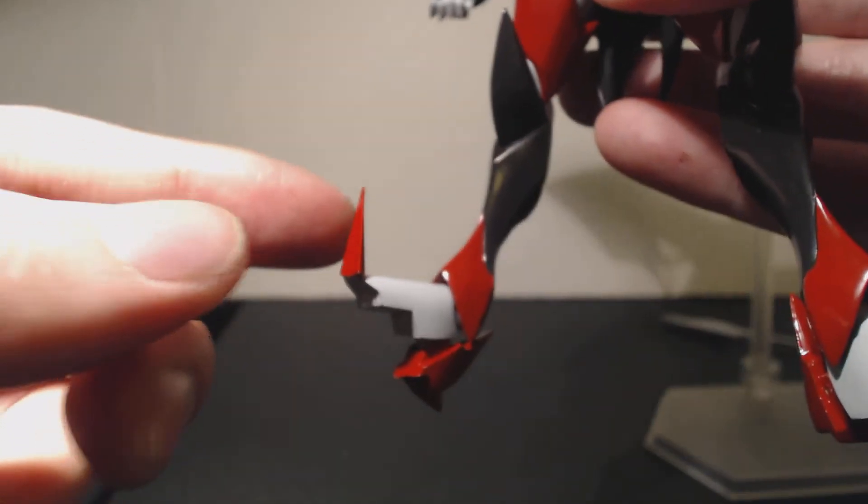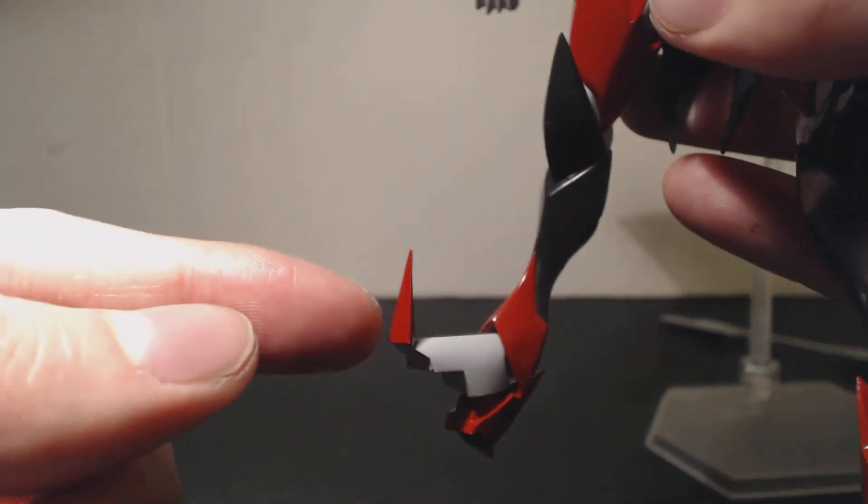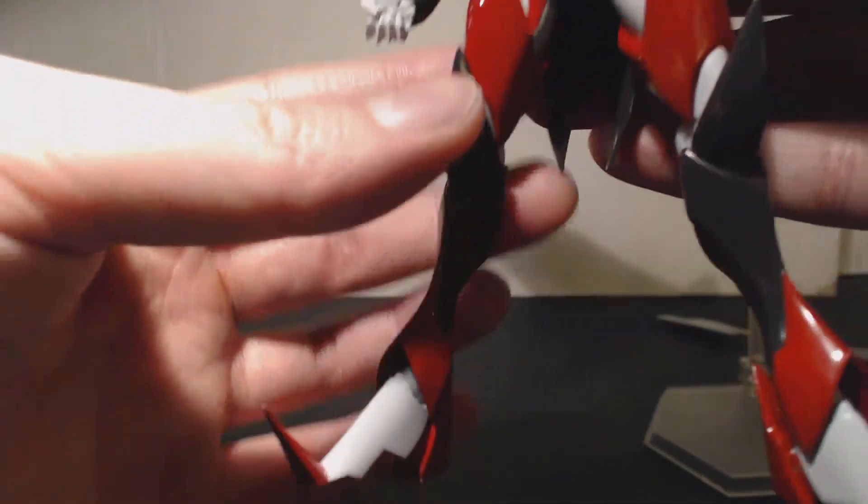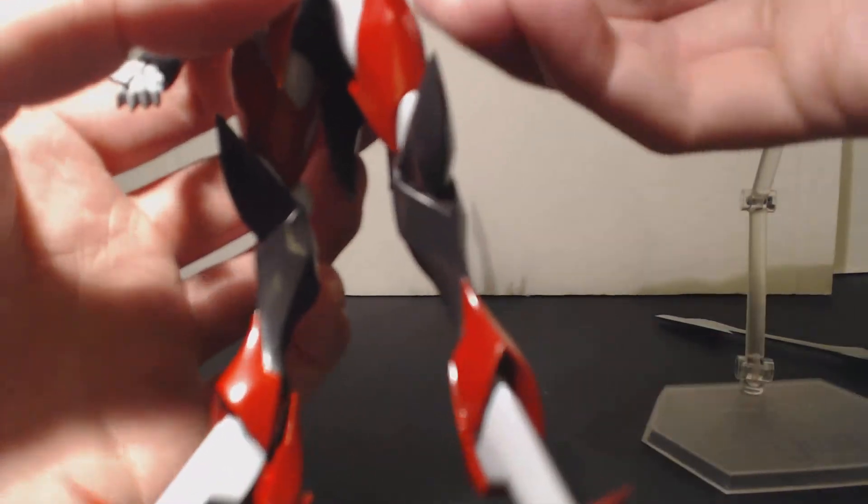All right, one thing you have to be really careful about when you're posing with this figure is that this point is very sharp. It's also very thin, so it's pretty much gonna break very easily if you drop it. So make sure you don't drop your toys and make sure you don't get it caught on anything when you are posing.